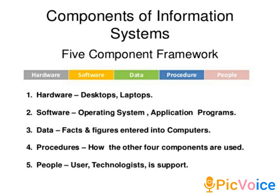Now we see computer hardware. Computer hardware consists of physical components involved in the input, output, and processing of data. It includes input devices, operating systems, processors, media devices, and others. Simply put, computer hardware refers to peripheral parts or peripheral devices.